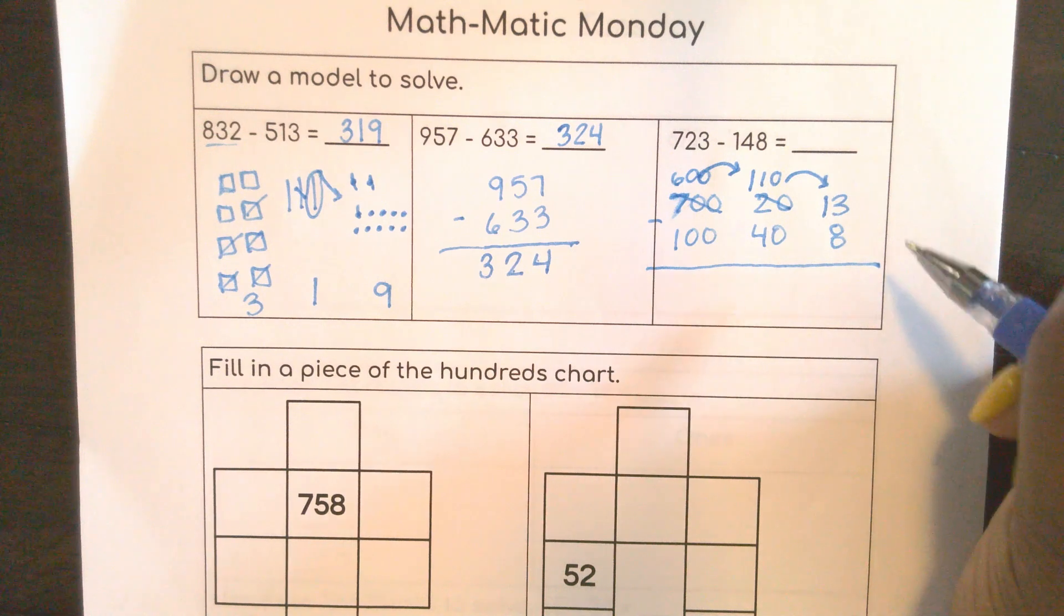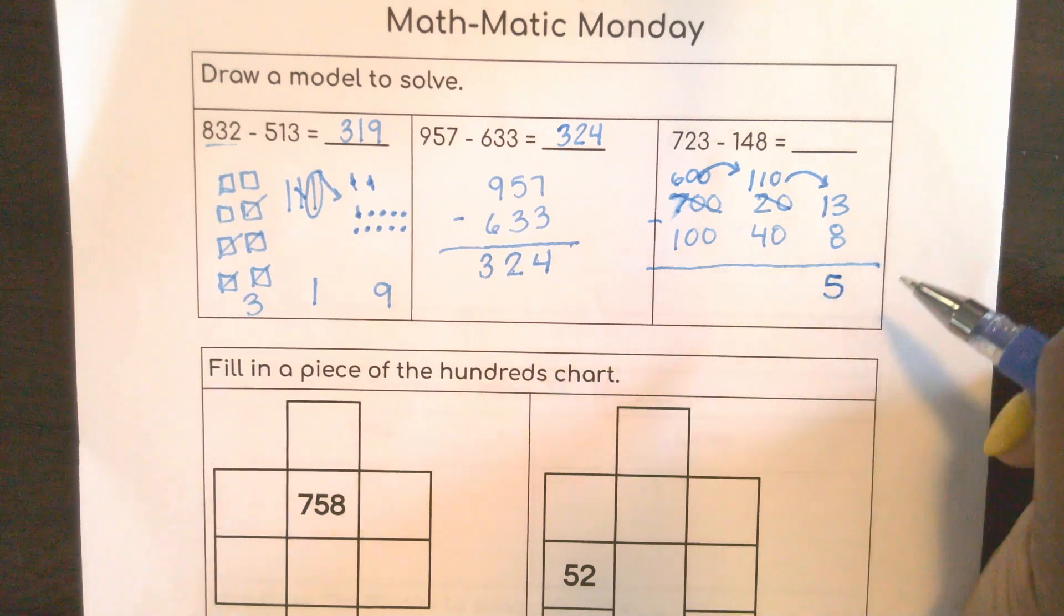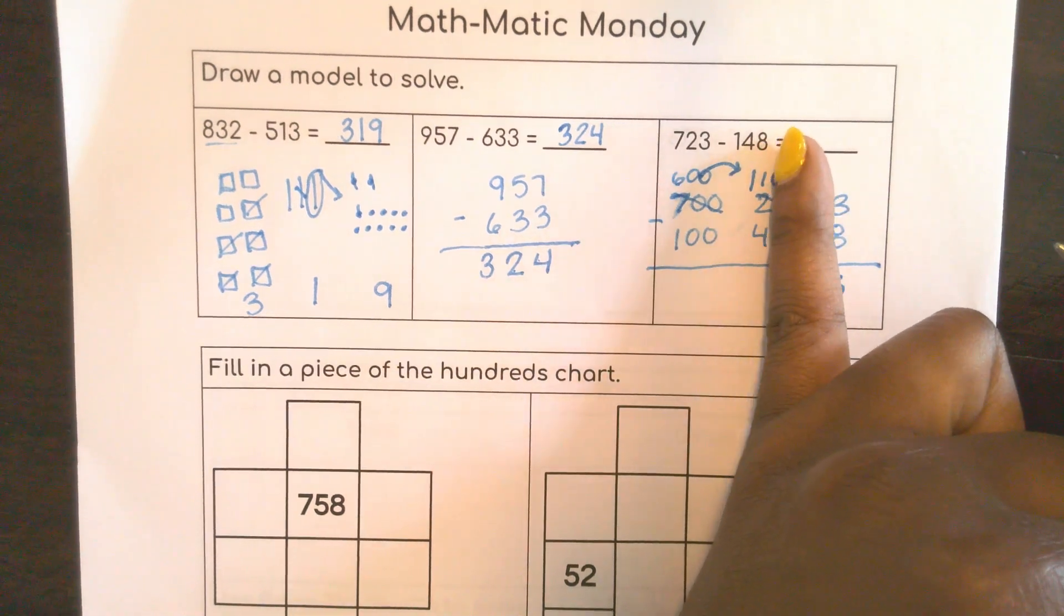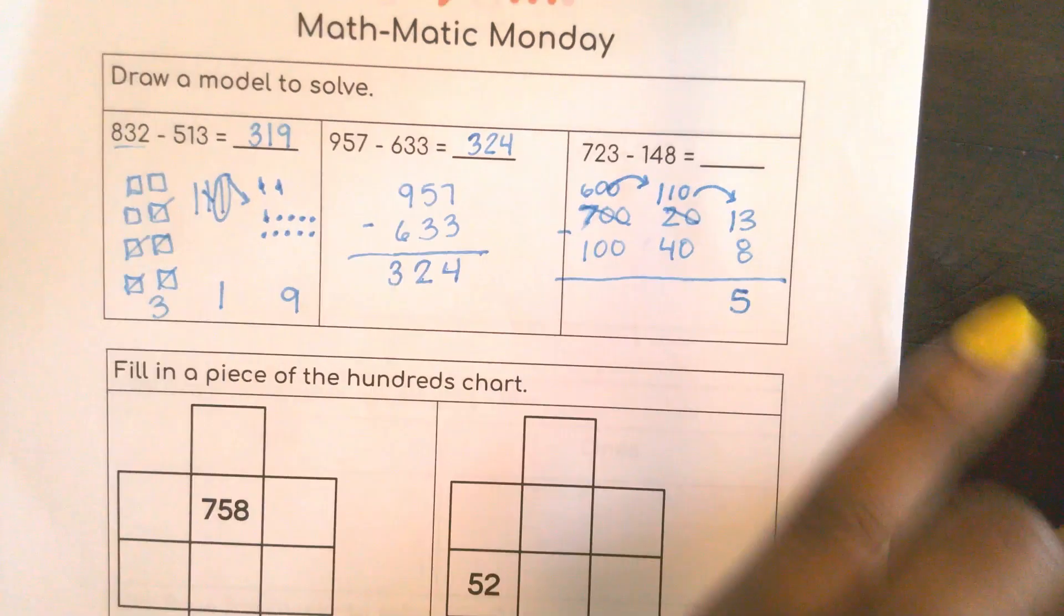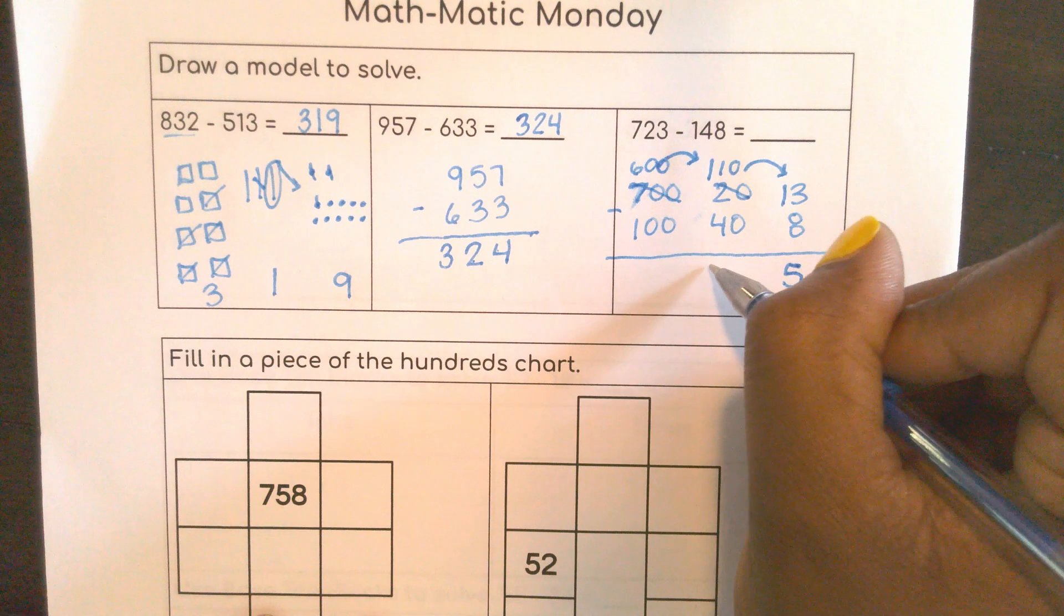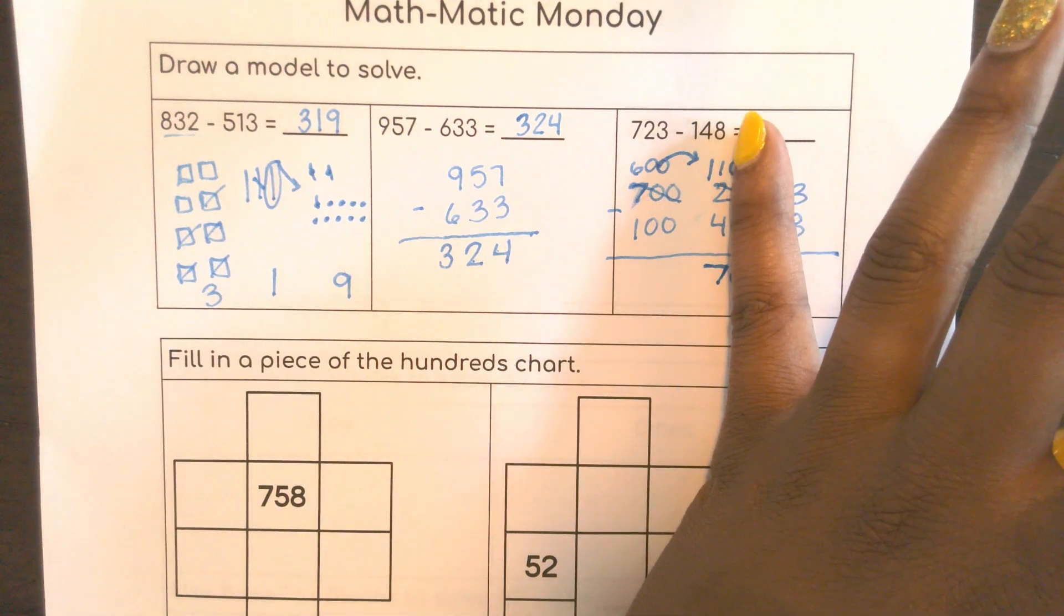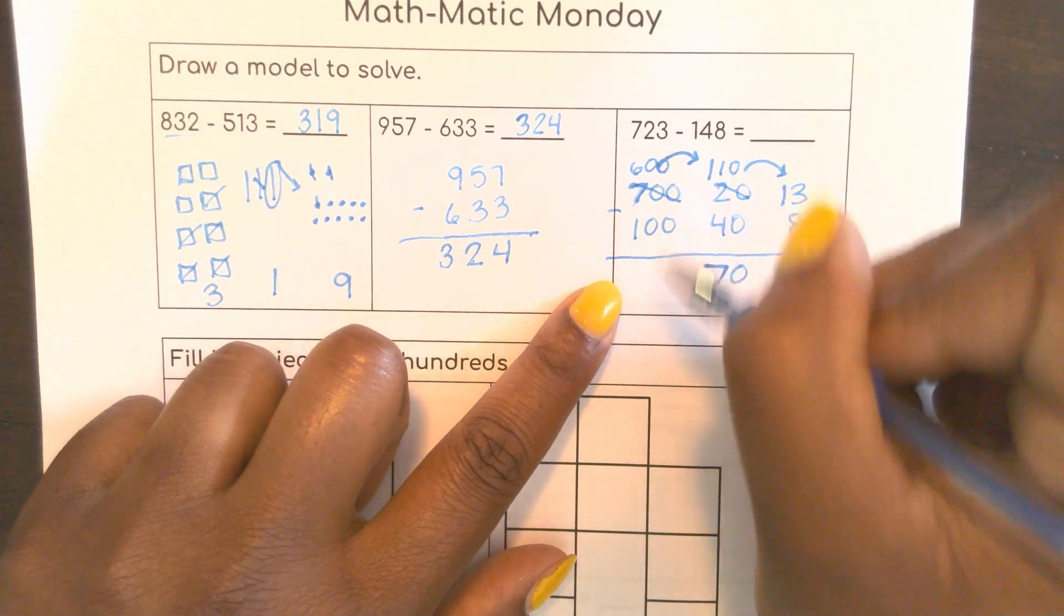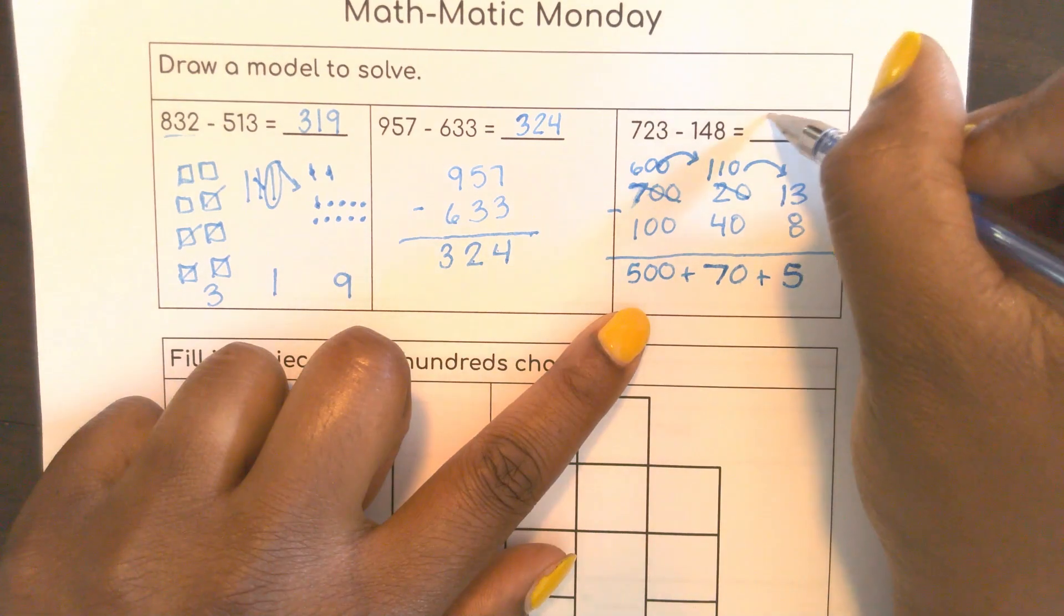So now I can subtract 13 minus 8. See, I need two more to get to 8, to 10. Two more to get to 10 and three more, that would be 5. Eight plus 5 is 13. Here a lot of people like to make it look like 11 minus 4. See how it looks like 11 minus 4? So that would give me 70. So even if you did that, 11 minus 4, and you got 7, then you know your zeros are here because it's the tens place. Now here I have 600 minus 100, which would give me 500. So this is the expanded form. If I put my answer, it would be 575.